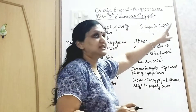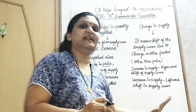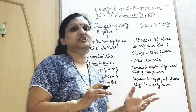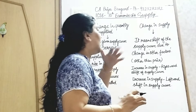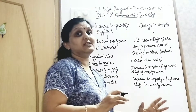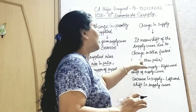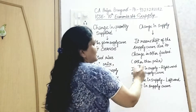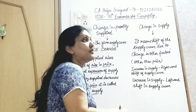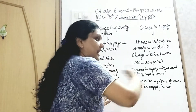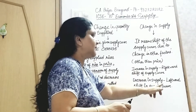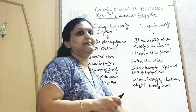Now, in change in supply, price is constant — price is not changing. Factors other than price, like technology, change due to season, population change, government policy change, or some other factor other than price — these cause a change in supply. An increase in supply means a rightward shift of the supply curve.